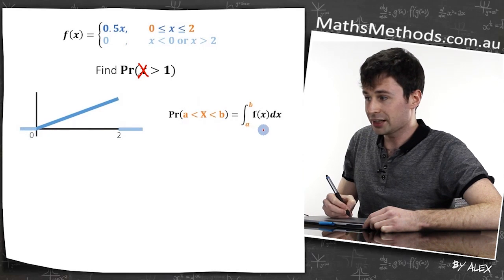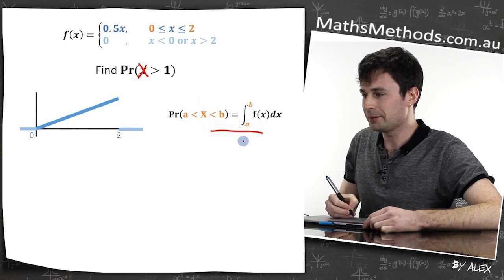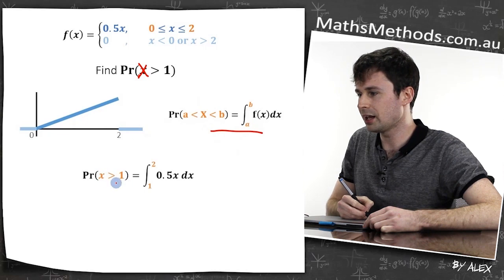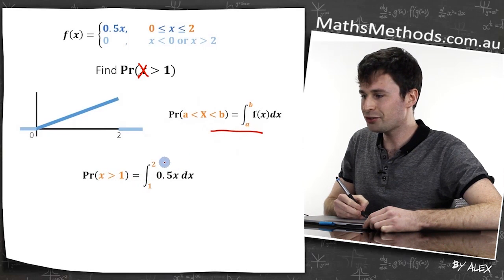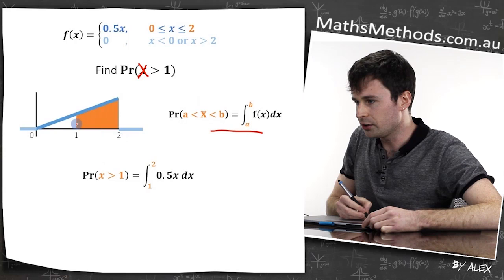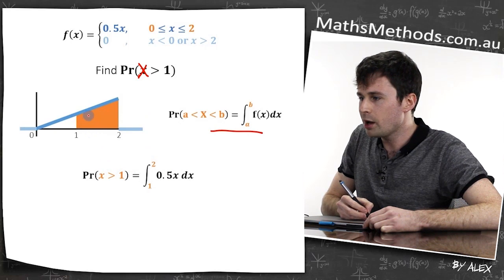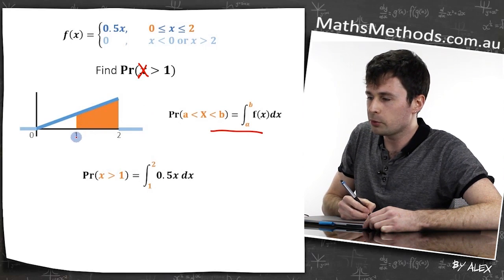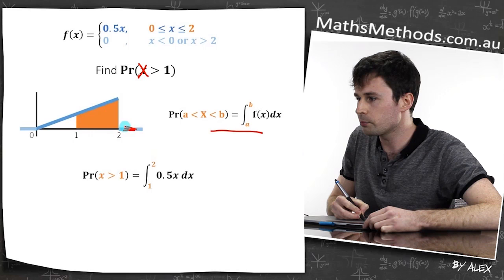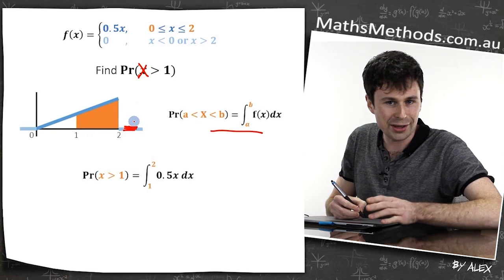Now the probability is actually to integrate between a to b. So the probability of x being larger than one is actually the integration between one and two, which is this bit here. Because x larger than one, the only area that exists there is between one and two. There's no area at this point, so we don't need to try to figure out anything there.